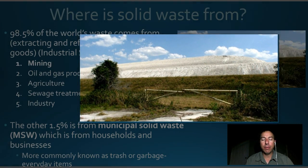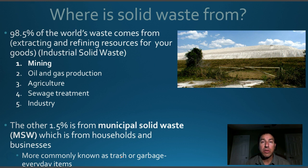Oil and gas production is next, producing a lot of waste like drilling sludges and waste from building plants. Agriculture produces a lot of waste too — mostly leftover crop residues like corn cobs and corn husks, which are mostly organic and biodegradable. Sewage treatment produces solids that go to landfills. Industry is the last major source, including pallets, cardboard boxes, and scrap metal from manufacturing — much of which can be recycled.